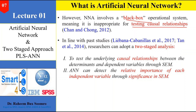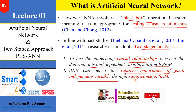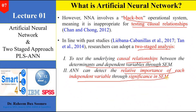In line with past studies, researchers can adopt a two-stage analysis. In the first stage, to test the underlying causal relationship between determinants and the dependent variable, we apply structural equation modeling using software like SmartPLS. Then we bring those results into the artificial neural network. ANN can detect the relative importance of each independent variable based on the significance found in the SEM. Only those relationships and hypotheses which are significant are brought into the ANN, and the neural network will tell you which individual variable is the most important and which is the least important.